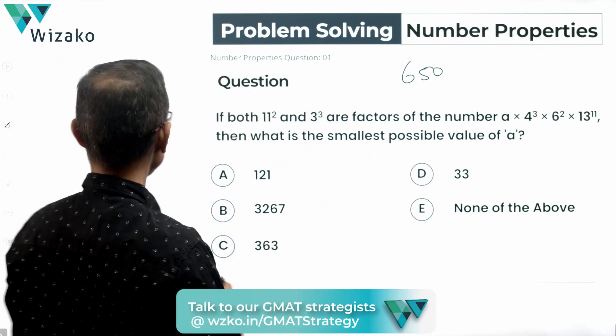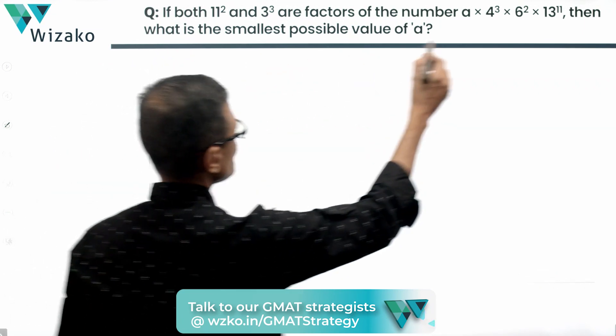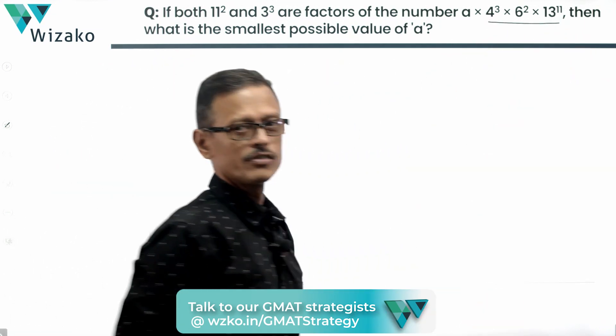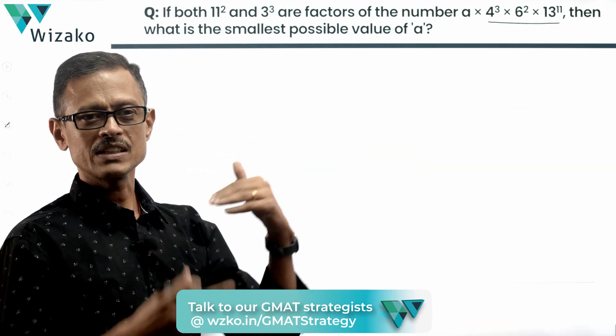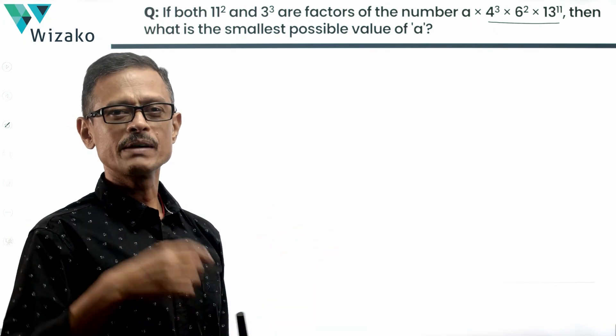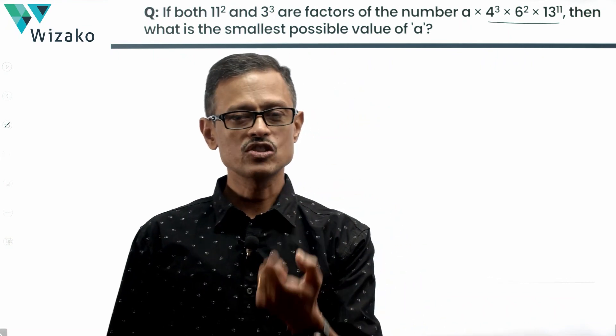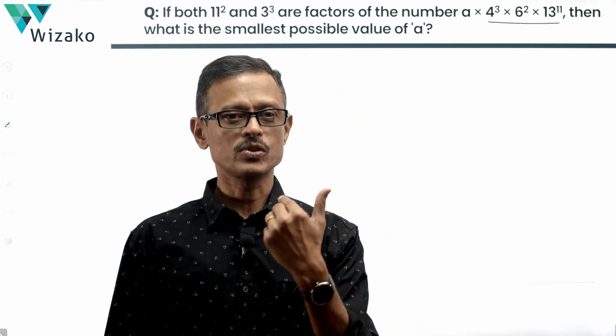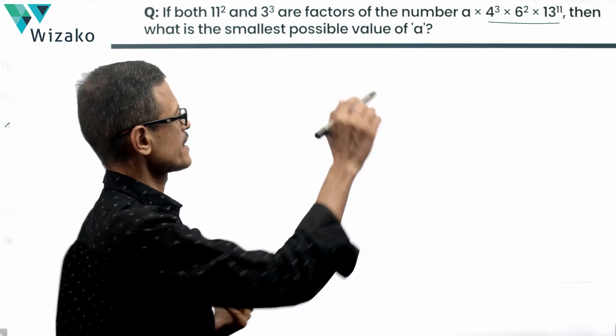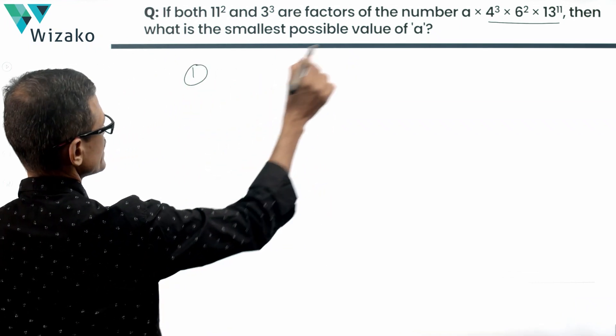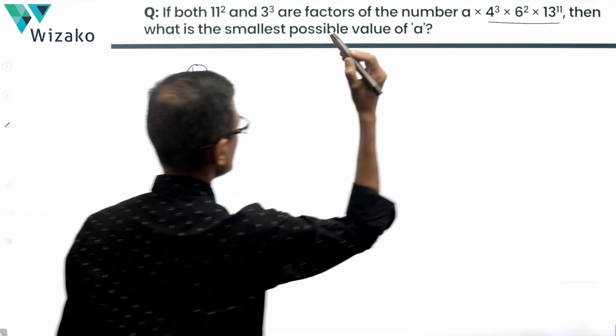So let's start by the first exercise. Let's prime factorize these terms that are there. The 4 power something, 6 power something, let's prime factorize it and write it. So it becomes so much more evident to know whether this number contains 11 square, this number contains a 3 cube. So step 1, we're going to prime factorize all the numbers that we have known other than A.